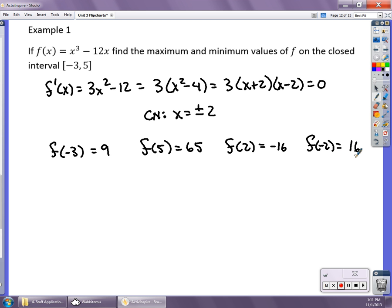So what this shows me, if I compare these four values now, that 9, that 65, that's -16, 16. 65 is the largest, so this is the absolute max on that interval. -16 is the smallest, so that's the min on that interval.